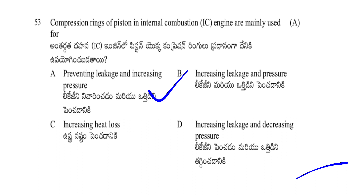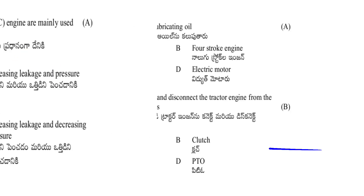Compression rings of pistons in an internal combustion engine are mainly used for: preventing leakage and increasing pressure; increasing leakage and pressure; increasing heat loss; or increasing leakage and increasing pressure. The answer is A — preventing leakage and increasing pressure. That is why we use compression rings in internal combustion engines.